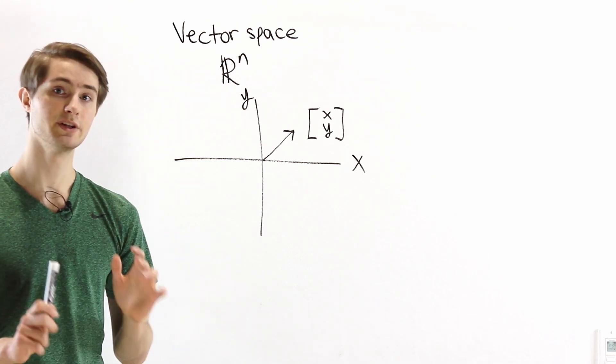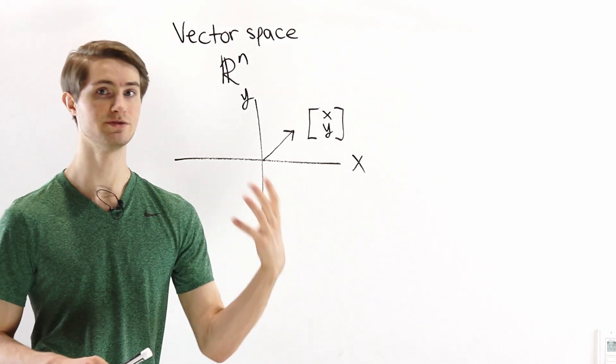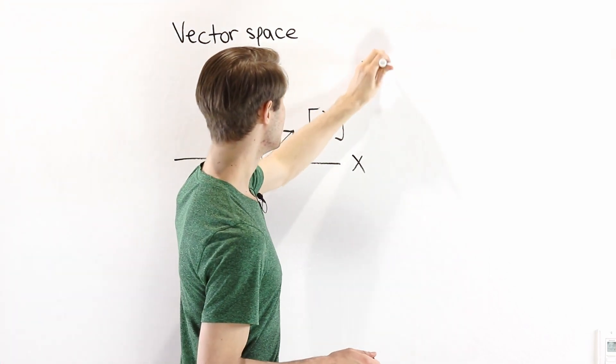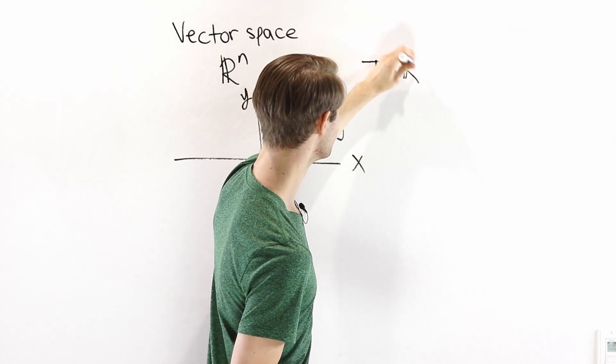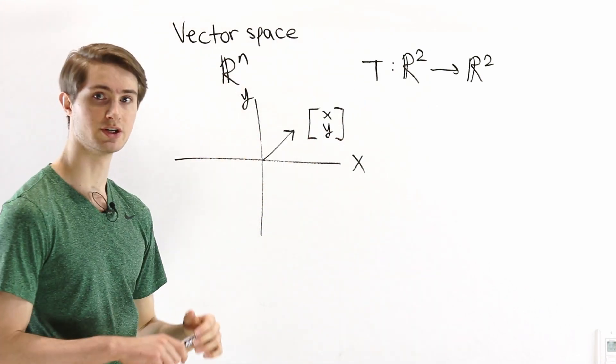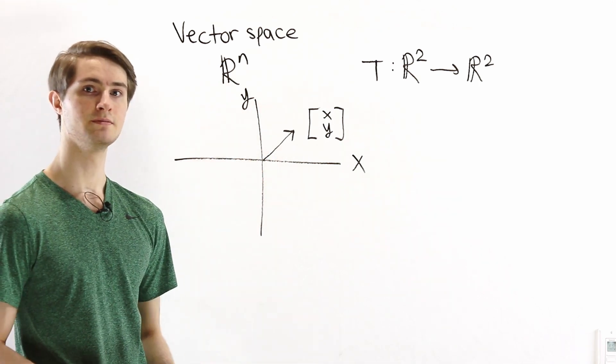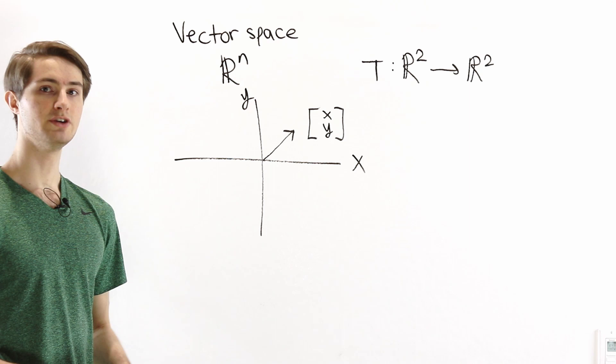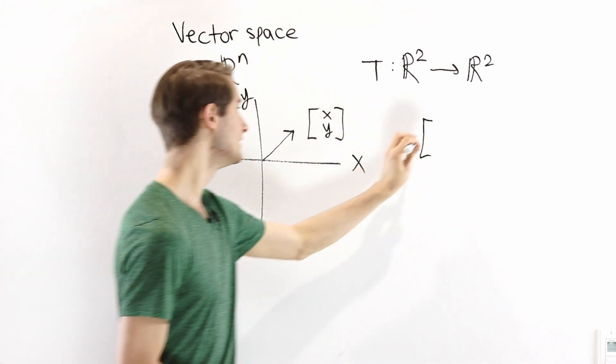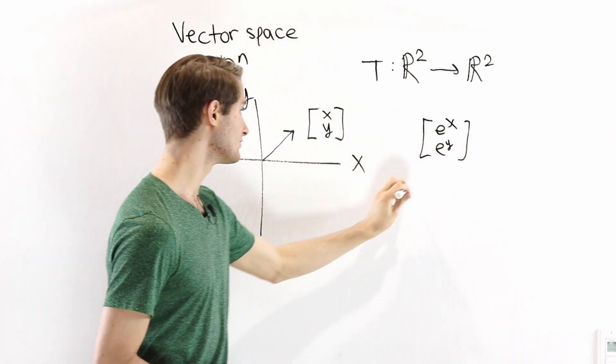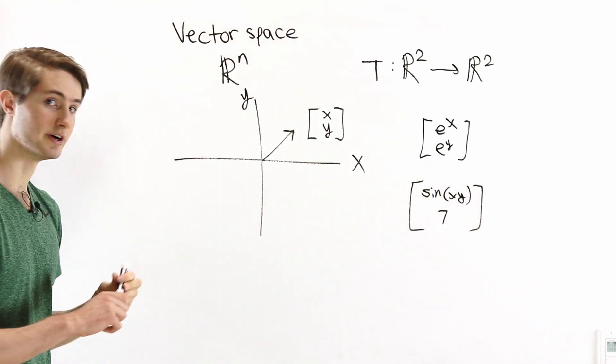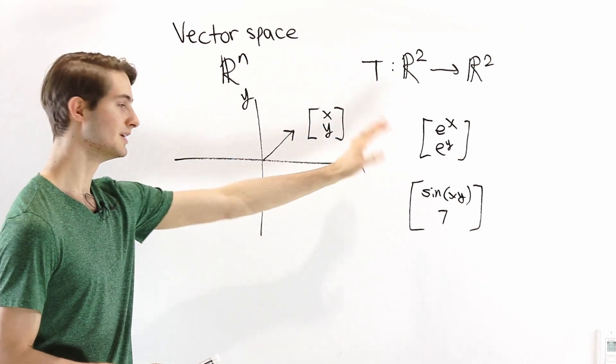Now in linear algebra, one of the things that we like to study is what happens when we apply different functions to a vector. In this case, we have some vector xy. We could think about a function that takes in these two-dimensional vectors in R^2 and gives us a new vector in R^2. There are a lot of different functions that we could choose. For example, we could have a function that takes in xy and gives us e to the x, e to the y, or sin of x and y.